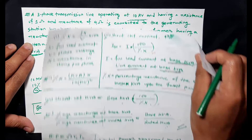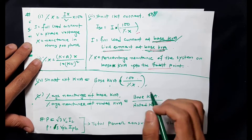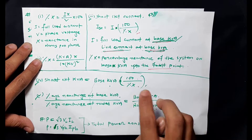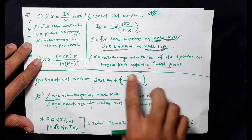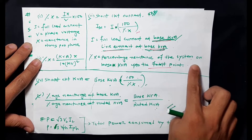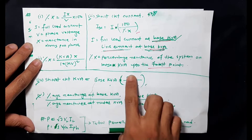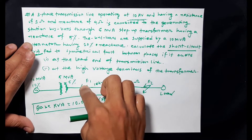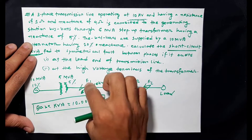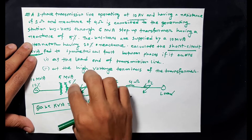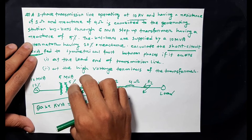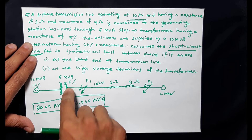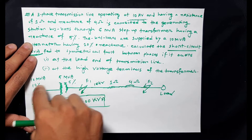We will add the base kVA into the actual percentage reactance. The percentage X is the percentage of the system on base kVA up to the fault point. That means the total percentage of the total reactance — the total equivalent reactance.